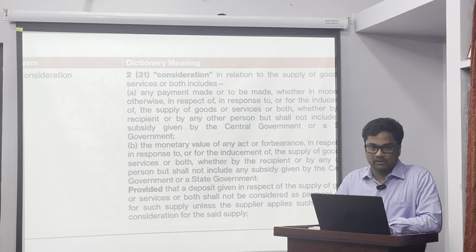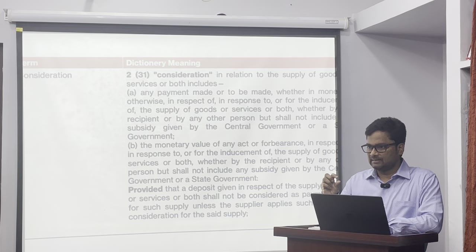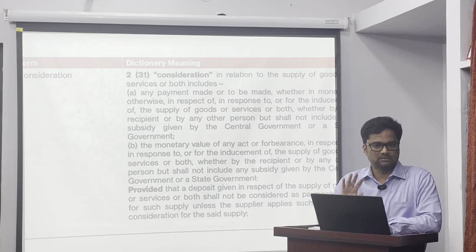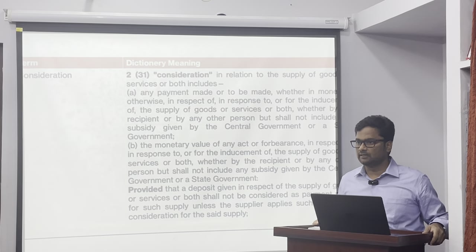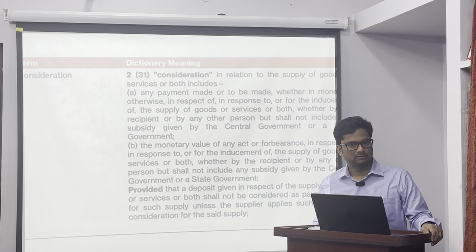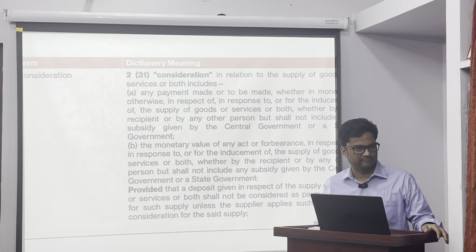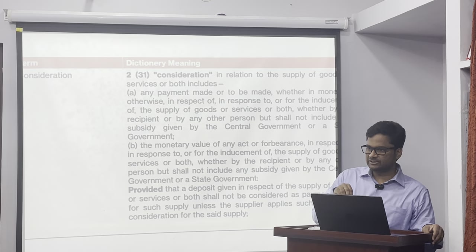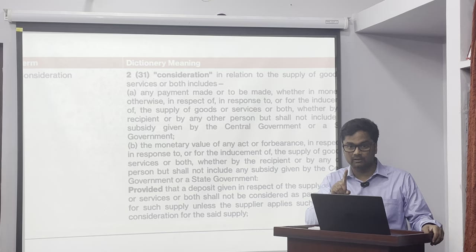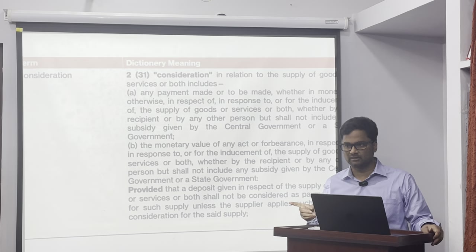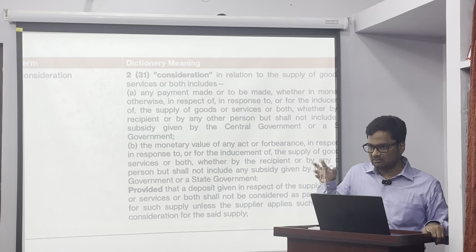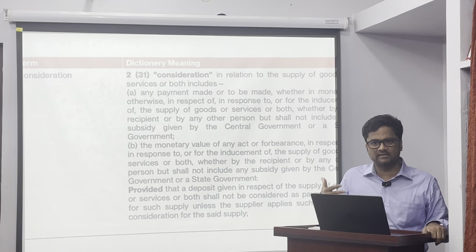But it does not include — and they may test you in the examination — subsidy given by government for manufacture of goods. You should not include that in the taxable value because that is not consideration. Supply happens only when there is a consideration. The consideration definition says subsidy given by government is not consideration. When it is not consideration, it is not a supply; when it is not a supply, it is not taxable.